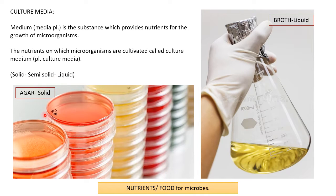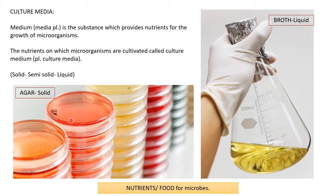Agar is used to solidify our culture media. Broth is where agar is not added, so it remains liquid. When the amount of agar is reduced to half, you get a semi-solid media — a jelly-like nutrient media. Solid media is where you use the complete required proportion of agar; mostly we use two grams per 100 ml.